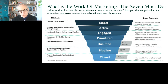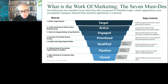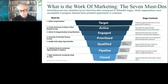We started working on this question a few years ago when we introduced the demand unit waterfall. Lately, when we talk about it, we really talk about the seven must-do's — which are literally what you must do to identify, attract, engage, prioritize, and convert opportunities. We want to identify which of the potential opportunities we want to forward through our revenue engines, and which people coming to our website or filling out forms actually belong to an opportunity that we could turn into revenue.